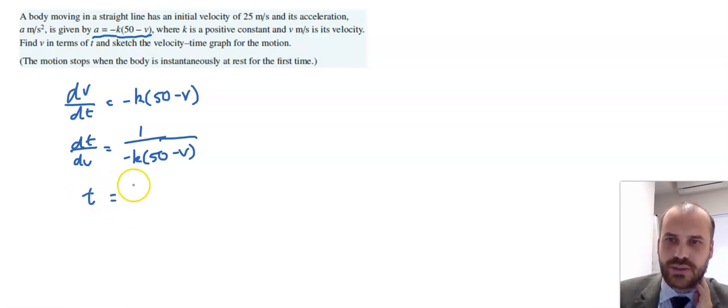So, we can say that t is equal to this 1 over negative k. I can put out here like this. And then, integral 1 over (50 minus v) with respect to v.